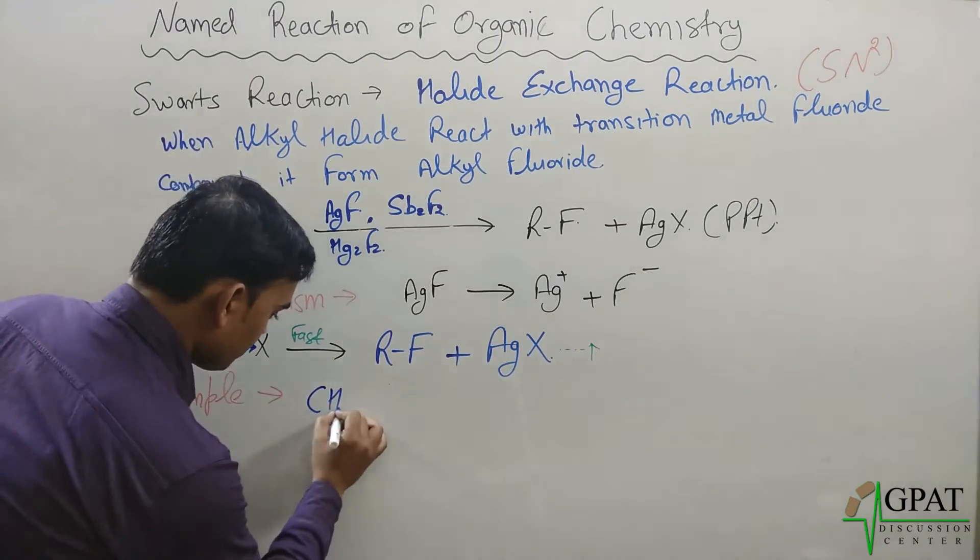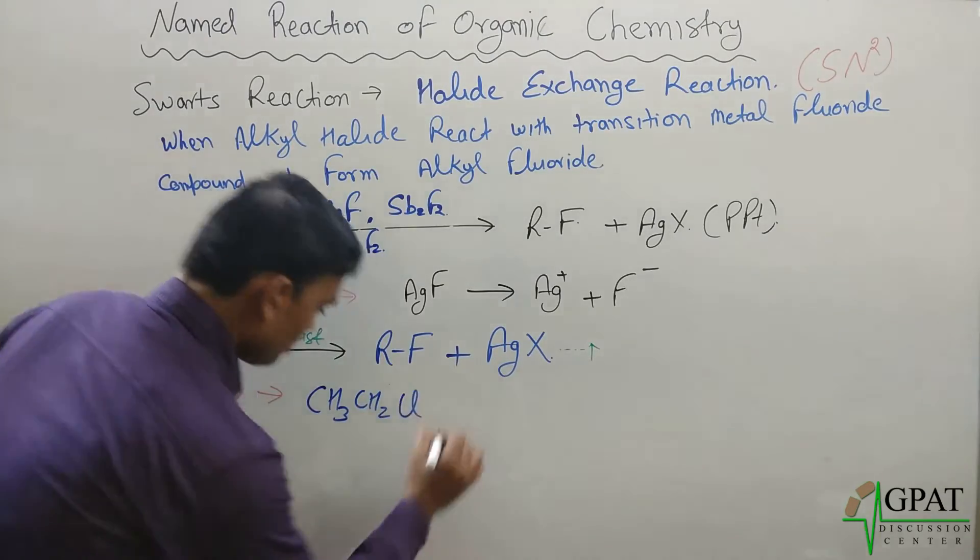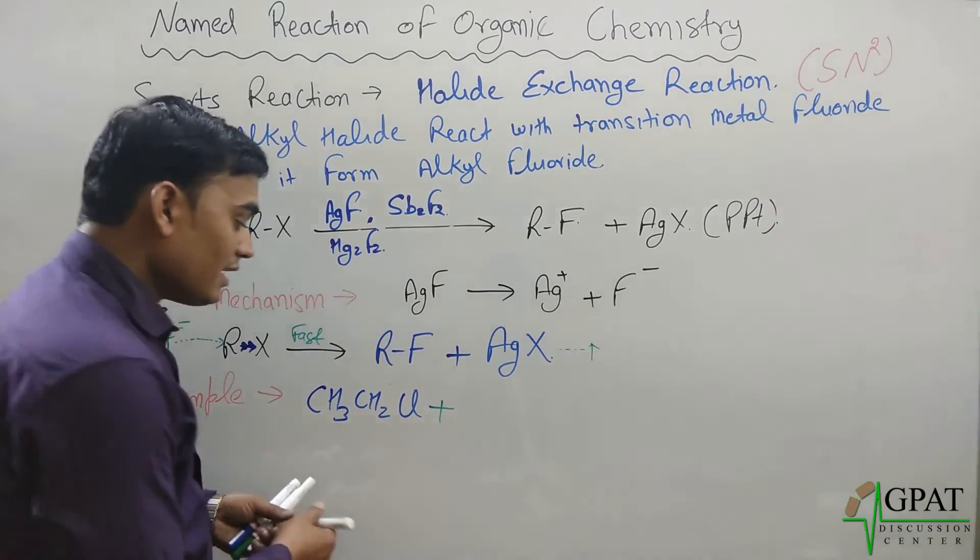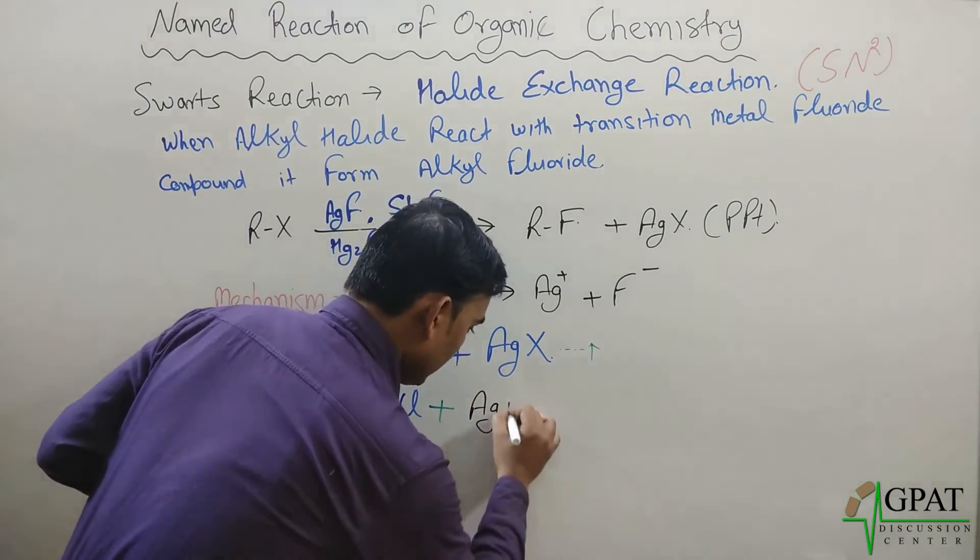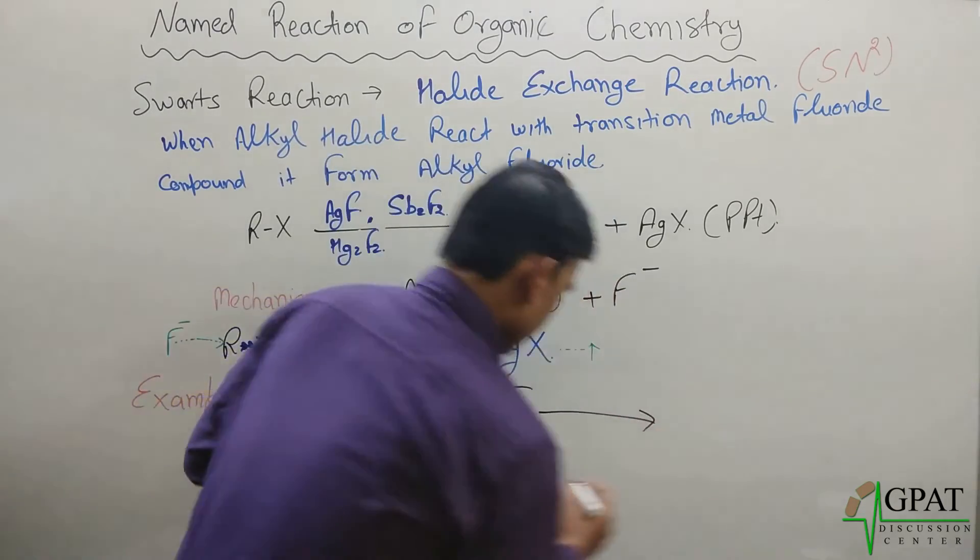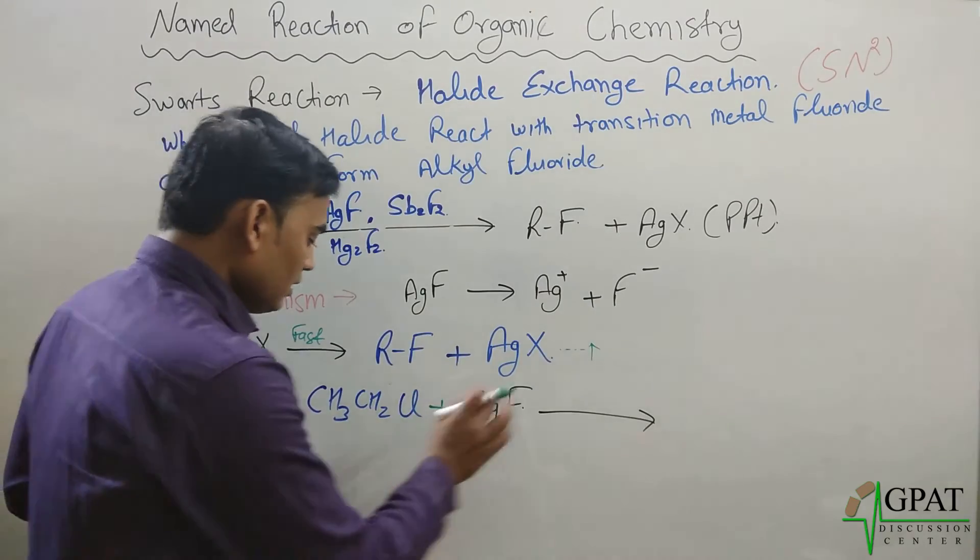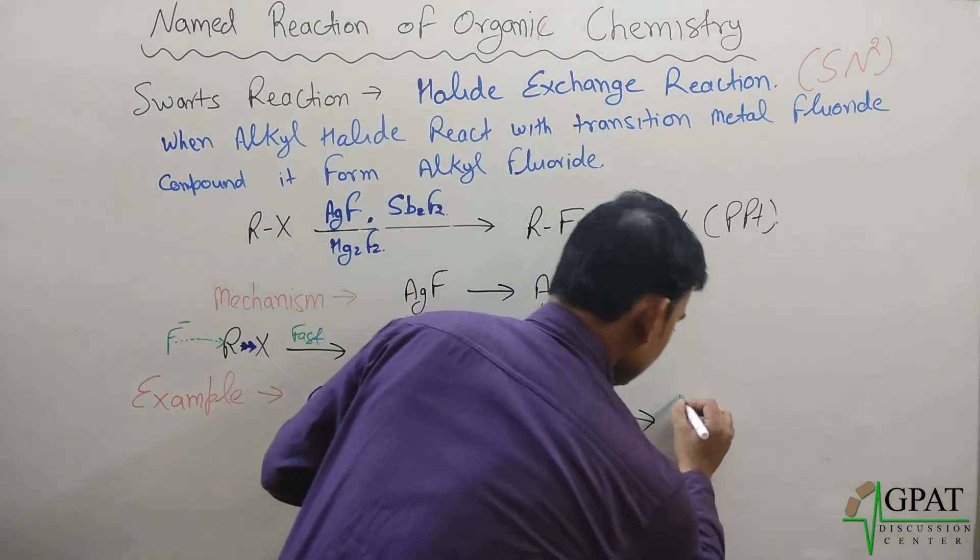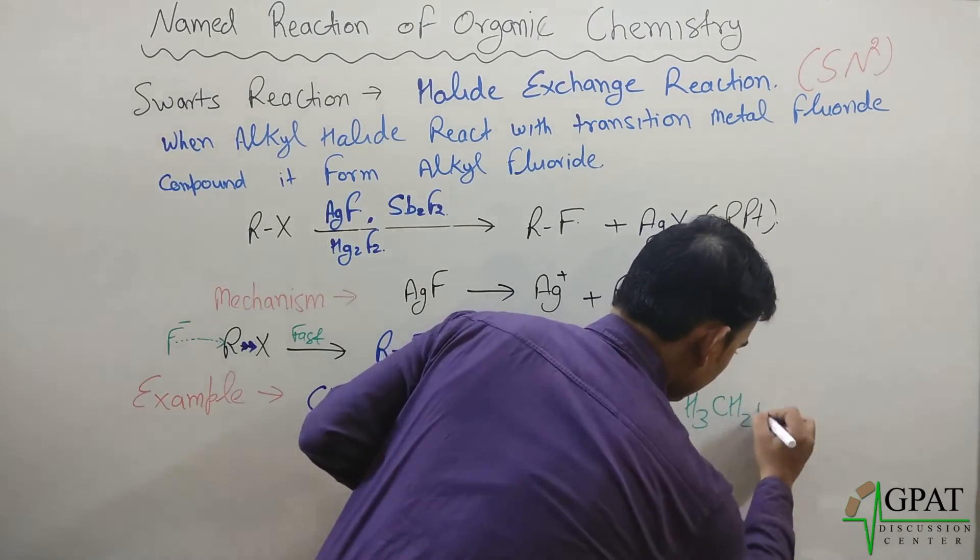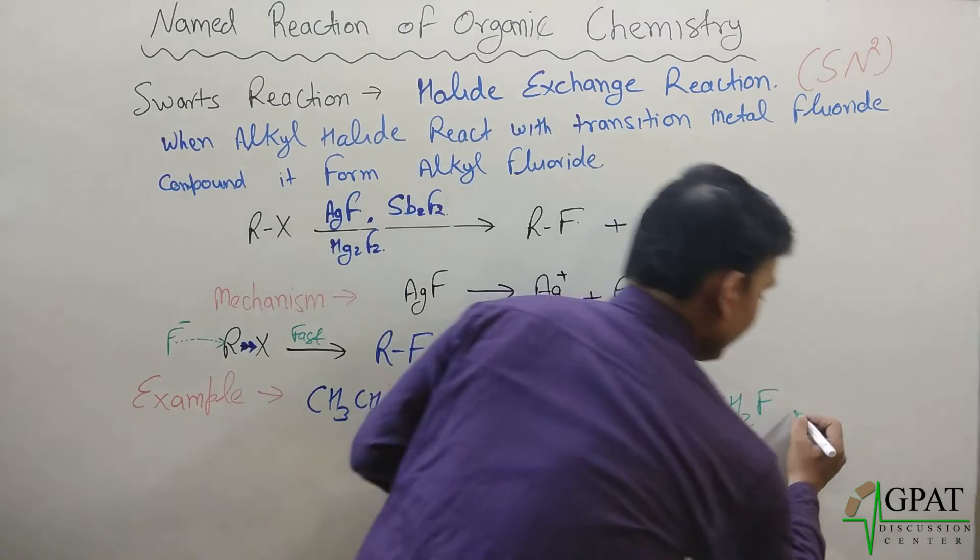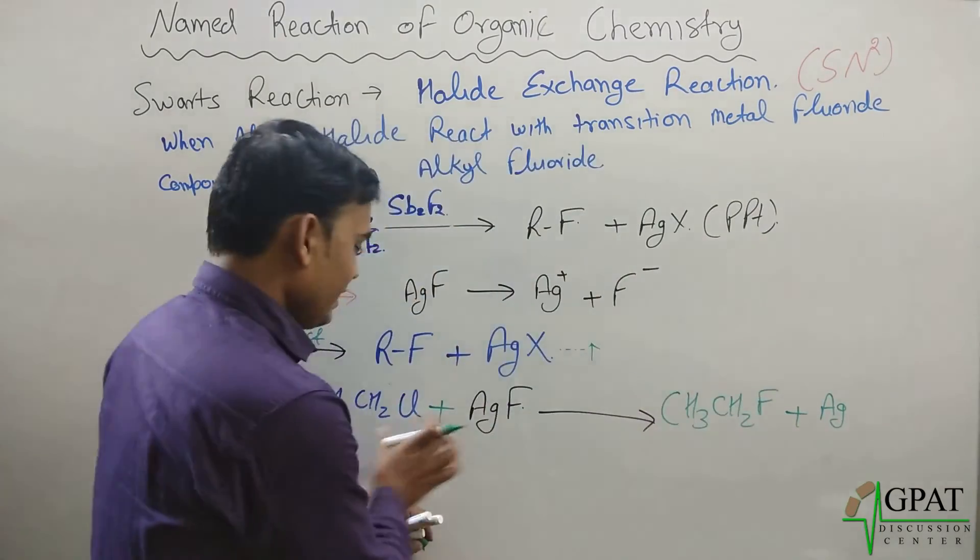Suppose this is your CH3CH2Cl, ethyl chloride. Then this ethyl chloride reacts with AgF. Then what happened? What will form? Ethyl fluoride. Then resultant product will be CH3CH2F. As well as in the form of precipitate, what will we get? AgCl.